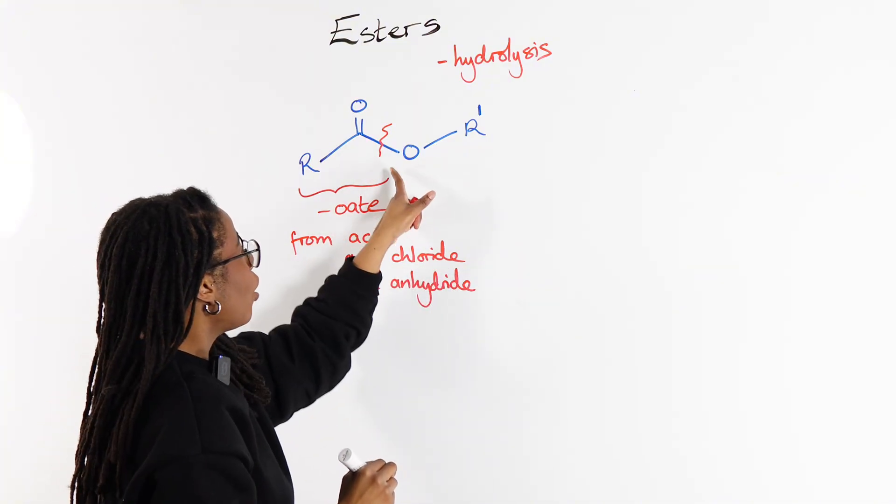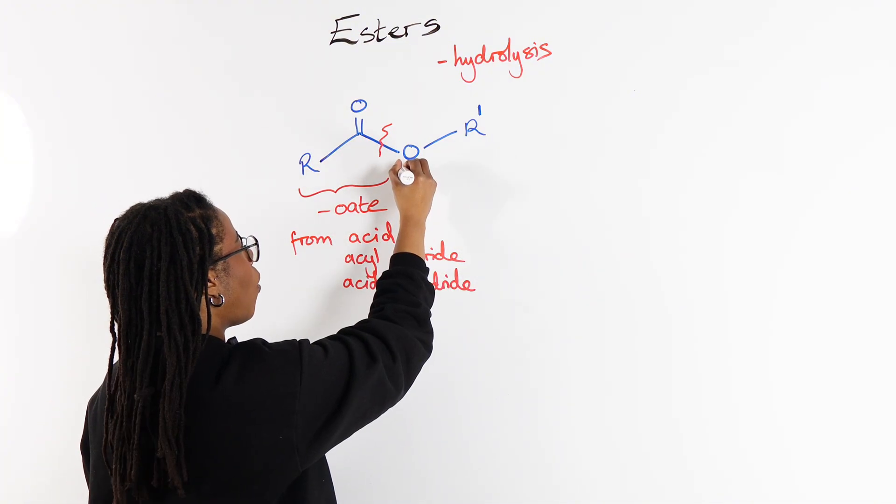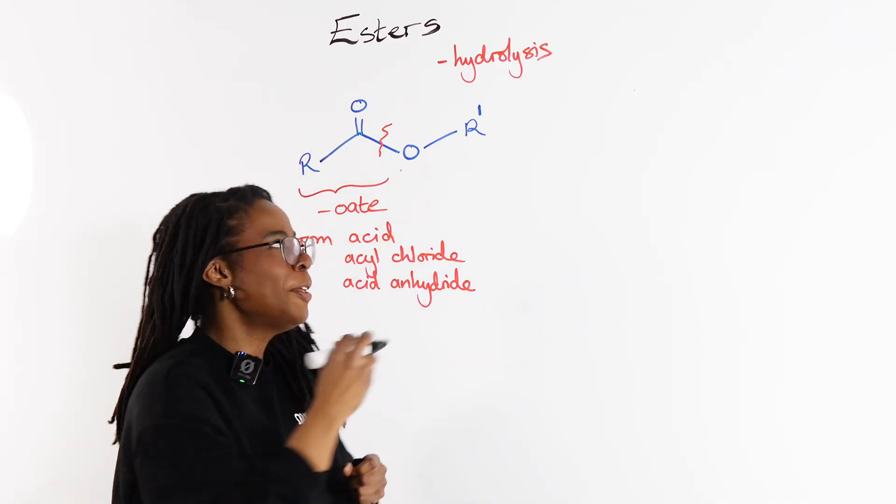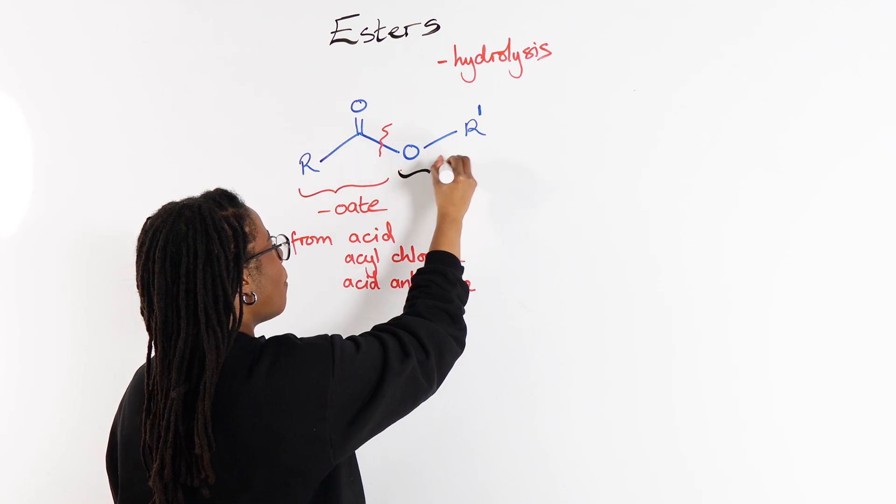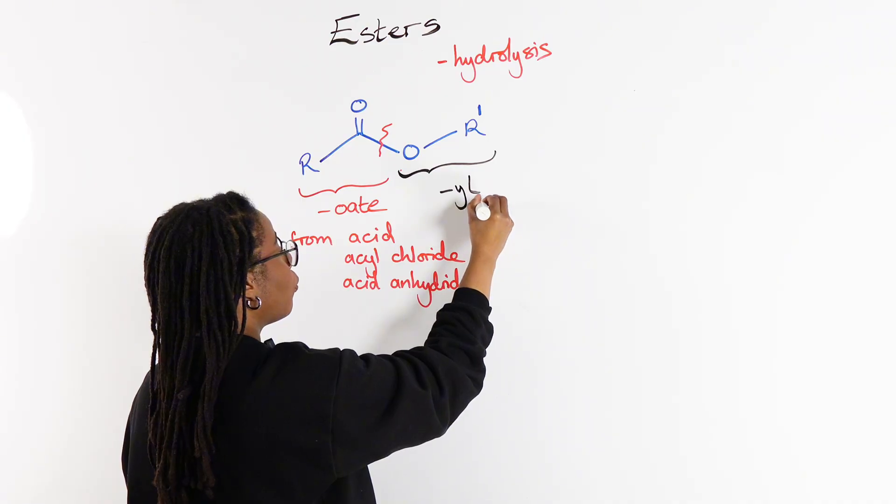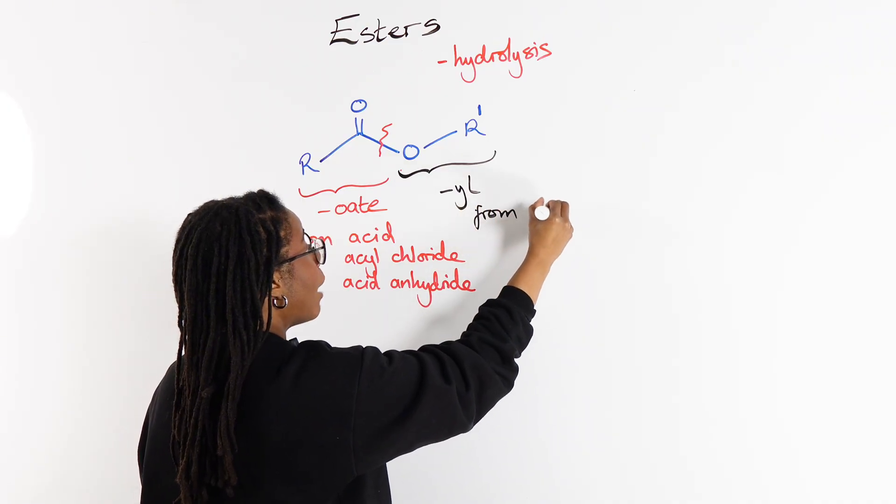And then on the right-hand side, just this OR bit—that's the bit that gets the yl, and that's the part that came from the alcohol.